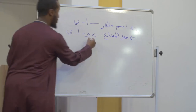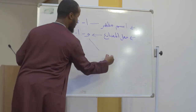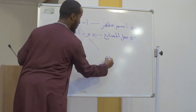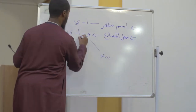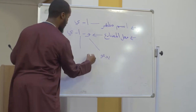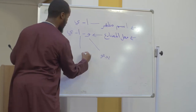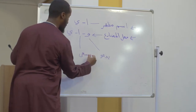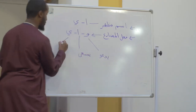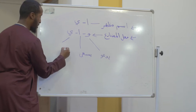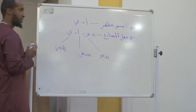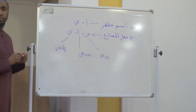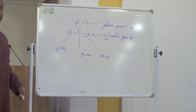So for example: the Waw would be yad'u. The Alif would be yas'a. The Ya would be yaqdi.